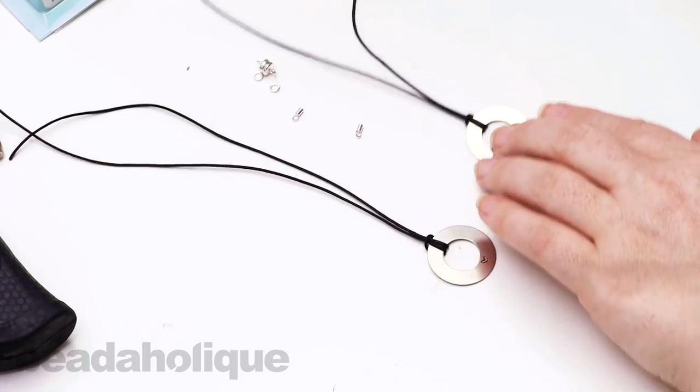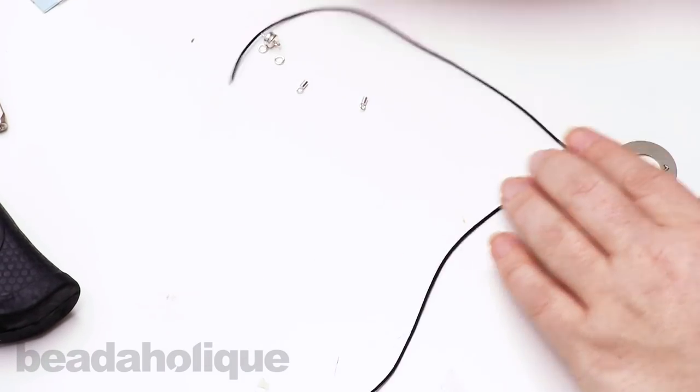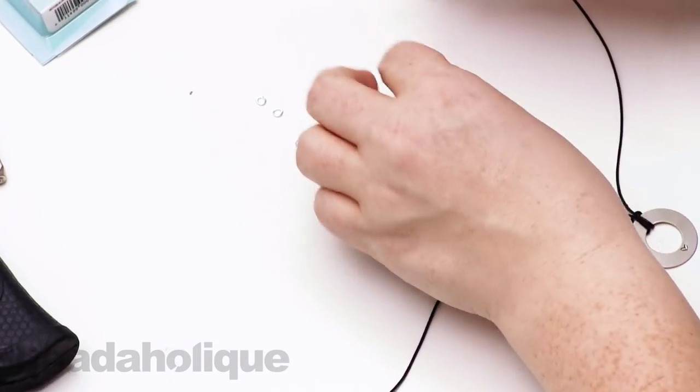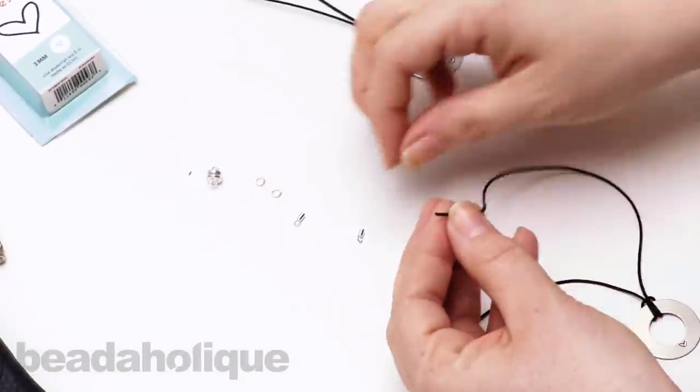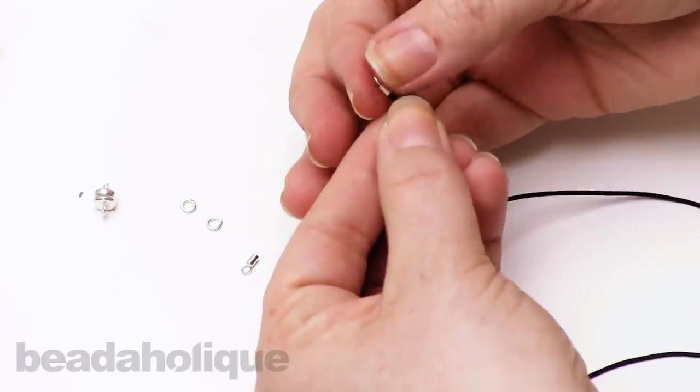So now all you're going to do is separate your two sides here. And you're going to take one of your crimpers and just slide it on to that one millimeter cord there.